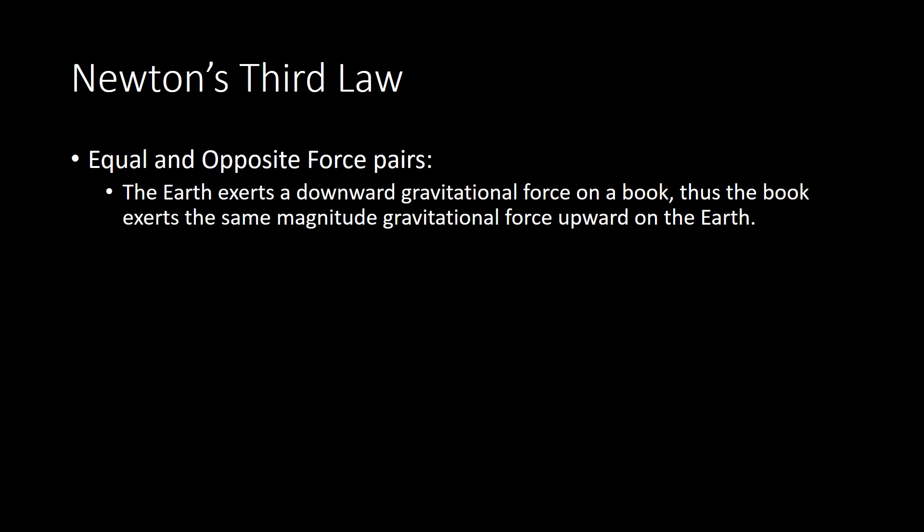So first let's think about a book which is just present somewhere around the earth. The earth of course exerts a gravitational force pulling downward on the book. Now Newton's third law says that there's an equal and opposite reaction to that. And what that means is that the book is exerting the same magnitude, that's the equal part, of gravitational force upward, not downward, that's the opposite part, on the earth.